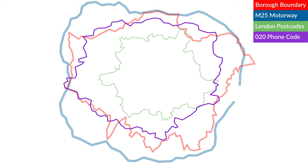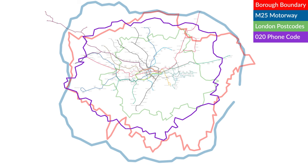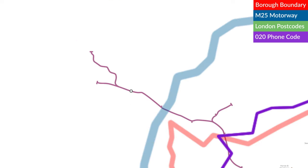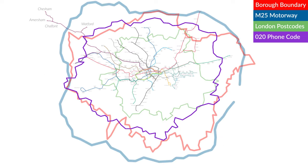And finally of course we can't not mention the London Underground. Some people consider themselves in London if their local station is on the tube map. But this would mean that far-flung stations out in zones 7, 8 and 9 would be considered London, which they're not — here they're in Buckinghamshire.